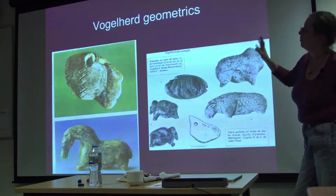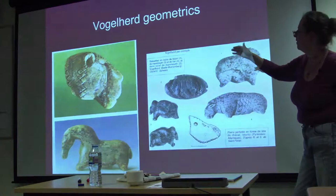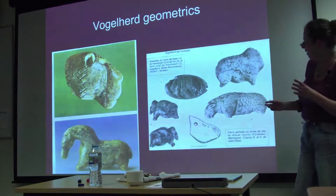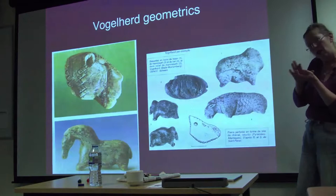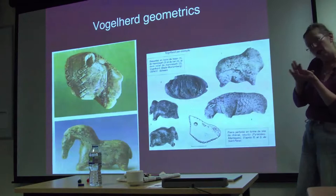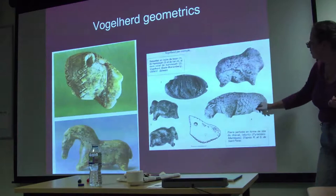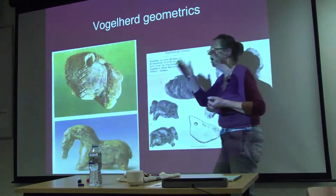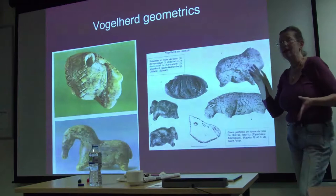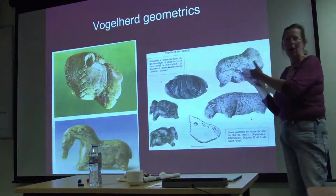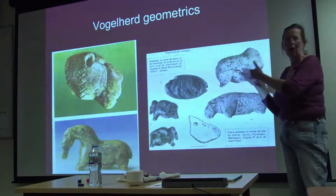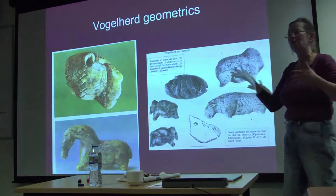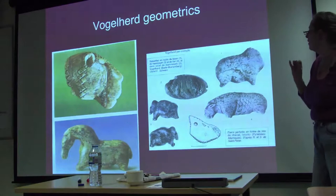From Germany — Hohlenstein-Stadel and Vogelherd, southern Germany — come these beautiful small ivory pieces, really at centimetre scale, hand-fit pieces. Notice the geometric motifs: the beautiful horse has little motifs on its saddle back, the lion head has diamond-shaped cross-cutting. This is highly reminiscent of the geometric engravings on the Blombos haematite — though many archaeologists of the European Upper Palaeolithic will say you can't bring African material in to talk about it. Why not? You can, if you've got a strong enough theory.